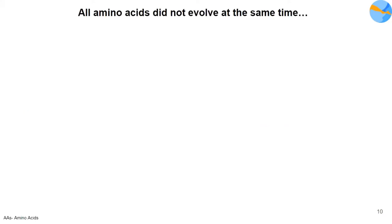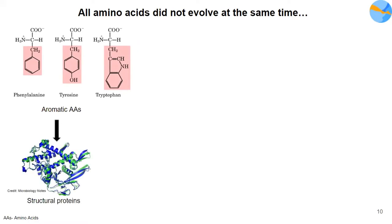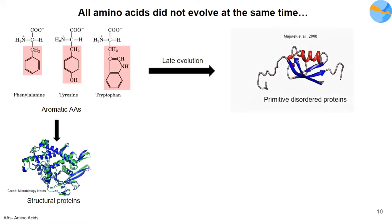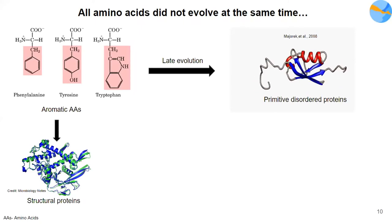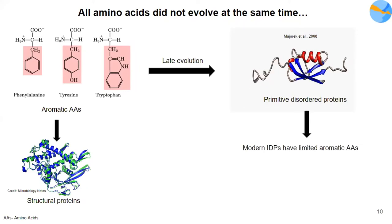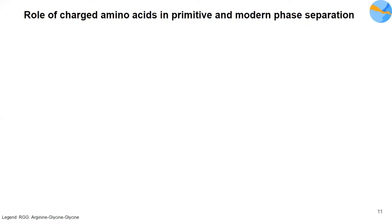Before delving into amino acid composition similarity, I should mention that all amino acids did not evolve at the same time. Aromatic amino acids, which are more complex and have a higher molecular weight and promote structure in structured proteins, evolved much later. The late evolution of aromatic amino acids indicates that primitive disordered proteins might have probably been disordered — at least those which evolved before aromatic amino acids. This is supported by the fact that modern IDPs have limited aromatic amino acids and mostly charged amino acids, which promote disorder.